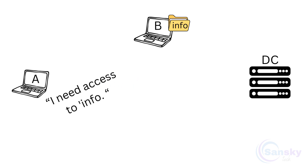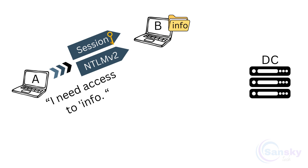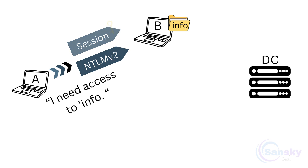A contacts B requesting access to the info shared folder, sending the session key issued by the DC. In response to B's challenge-response process, A also sends its NTLMV2 hash to ensure its authenticity. This process helps B verify that A is who it claims to be before granting access to the shared folder.